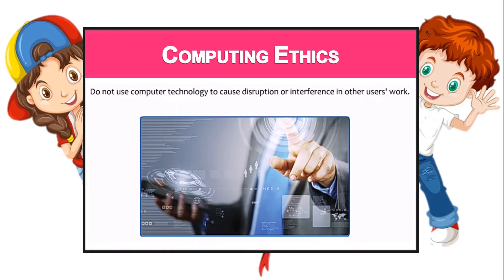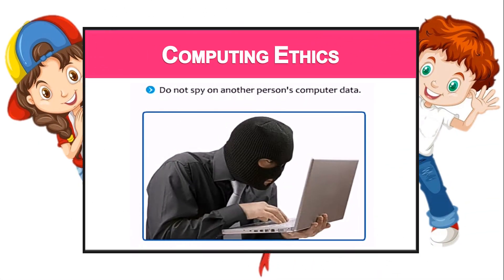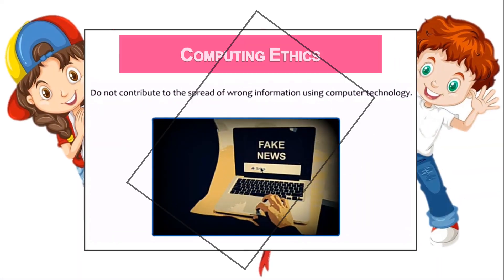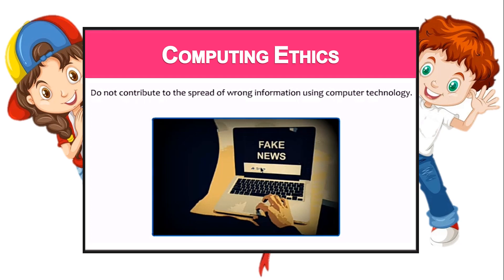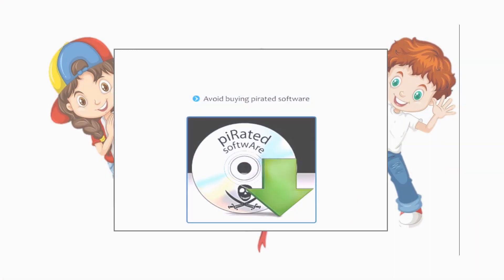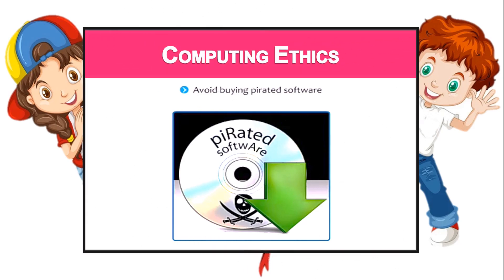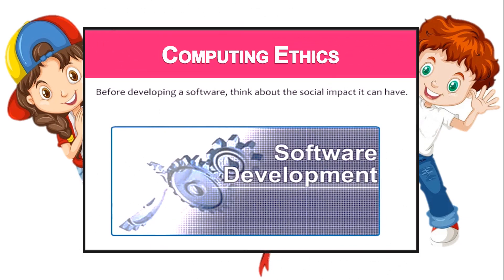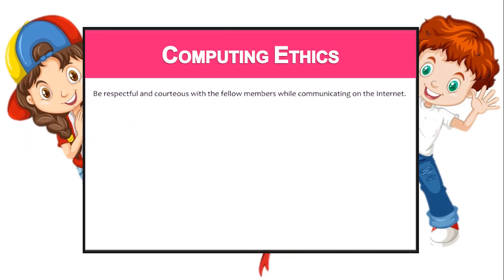Here are some computing ethics that you are expected to follow: do not use computer technology to cause disruption or interference in other users' work; do not spy on another person's computer data; do not use computer technology to steal information; do not contribute to the spread of wrong information using computer technology; avoid buying pirated software; pay for software unless it's free; before developing software, think about the social impact it can have; and finally, be respectful and courteous with fellow members while communicating on the internet.